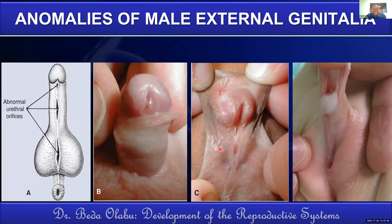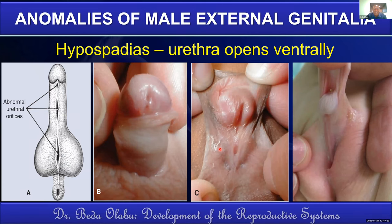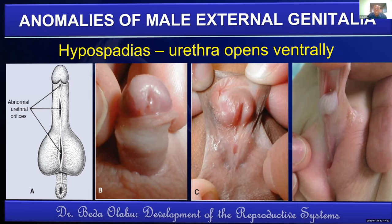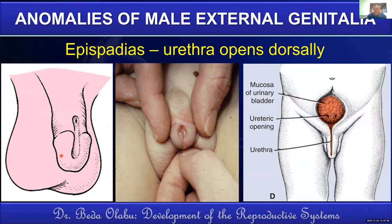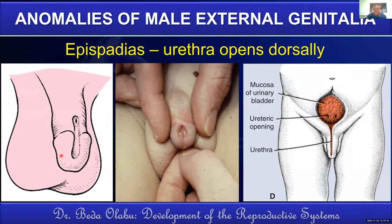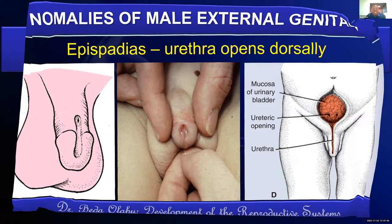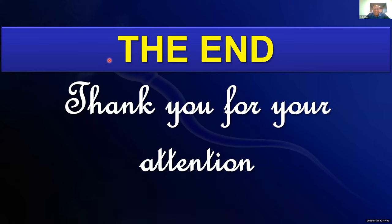Male genitalia malformations include hypospadias, where the urethra opens on the lower (ventral) part of the penis, and epispadias, where the urethra opens on the upper (dorsal) part. That concludes the summary of the development and congenital malformations of the reproductive systems.